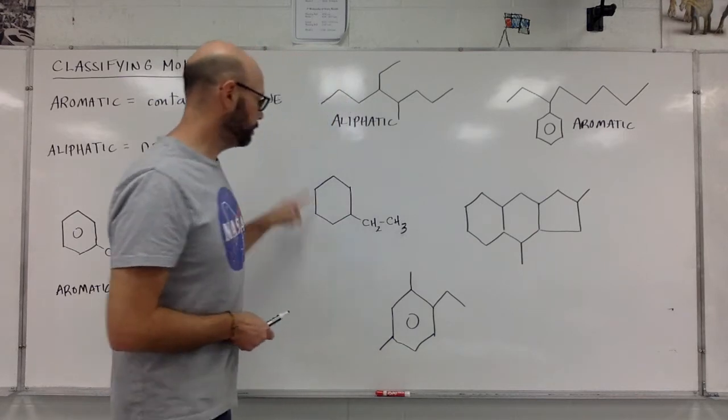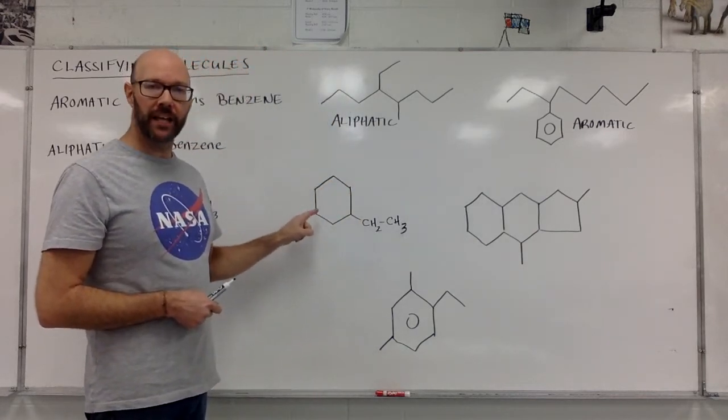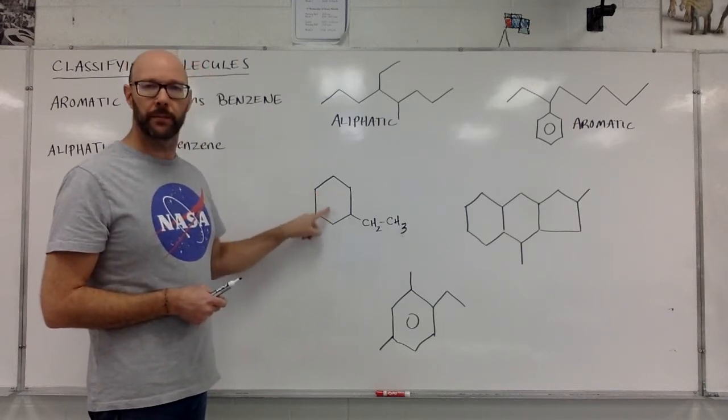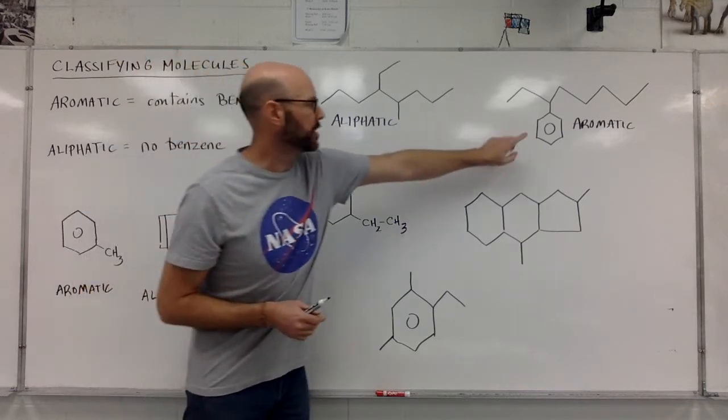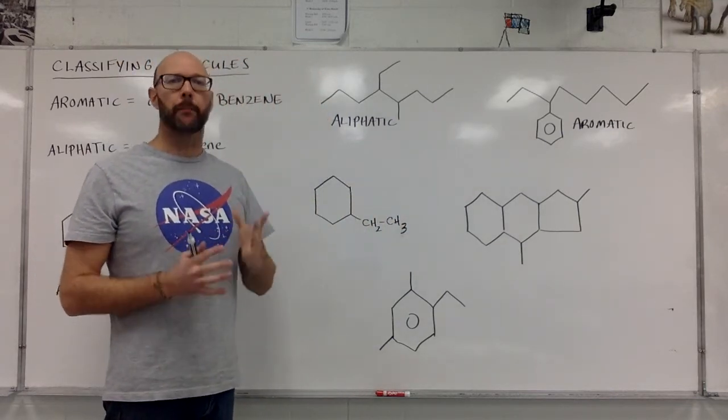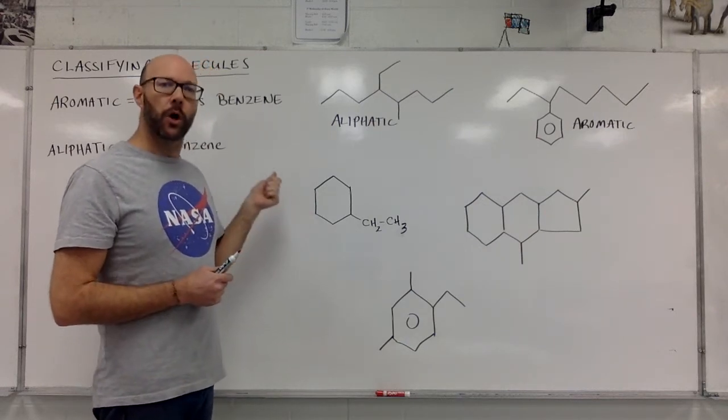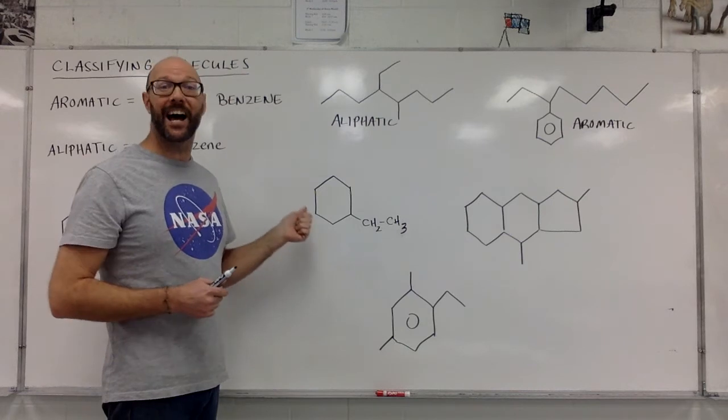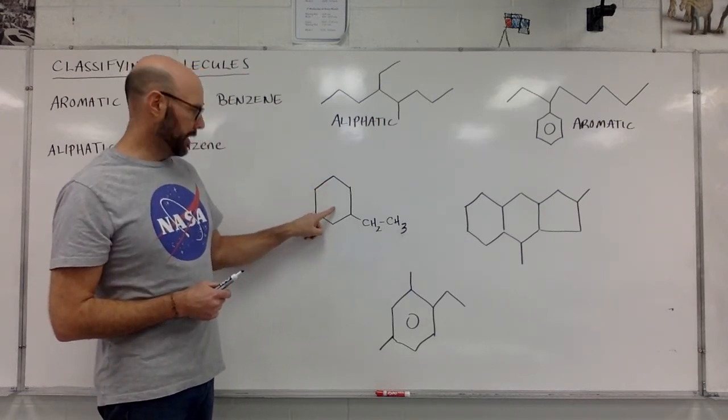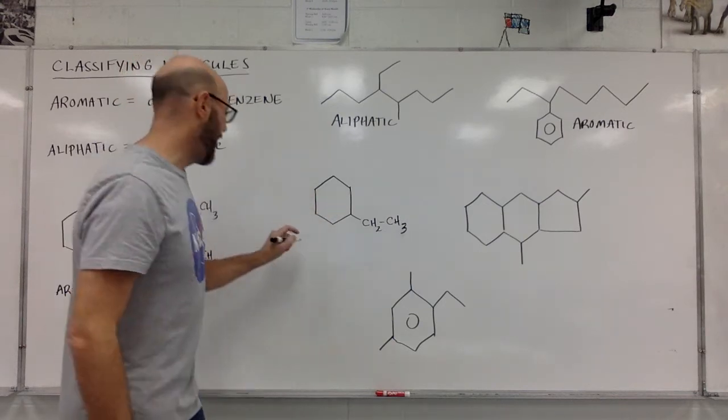A few more. This is a sneaky one. It's a cycloalkane. I don't see that circle in the middle right there. It's so particular. It's a hexagon with a circle in the middle, or specifically three double bonds, that makes it aromatic. This one's close. It is a ring structure, a six-sided ring structure, but it doesn't have those three double bonds. It doesn't have that circle in the middle. It's pretty sneaky, but it is aliphatic.